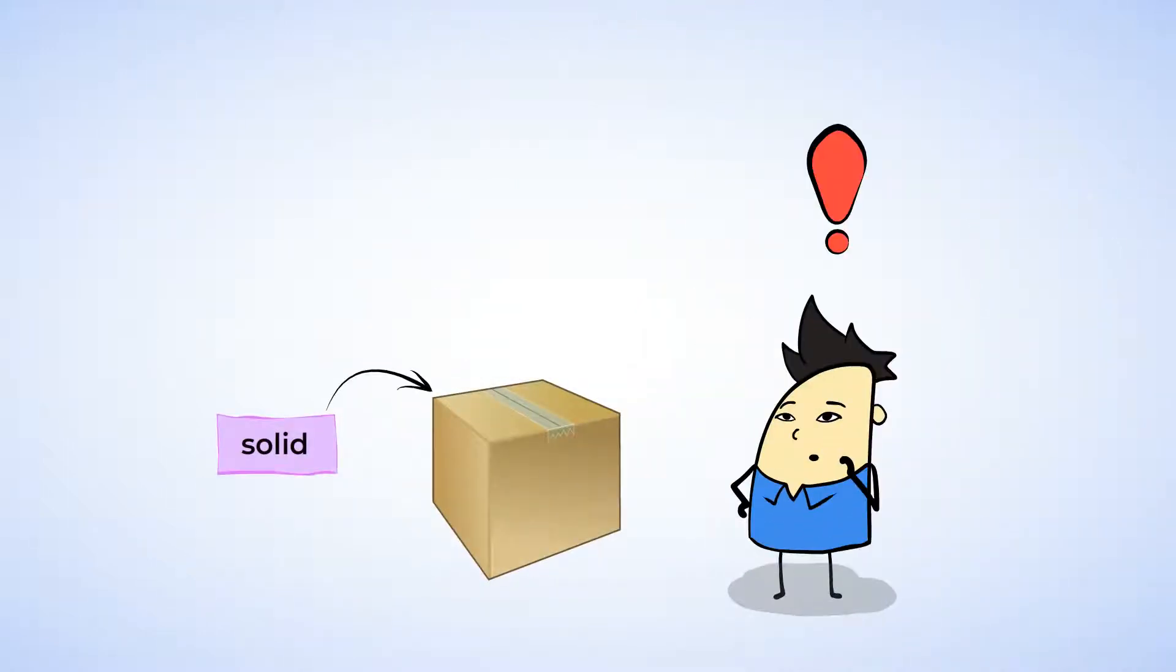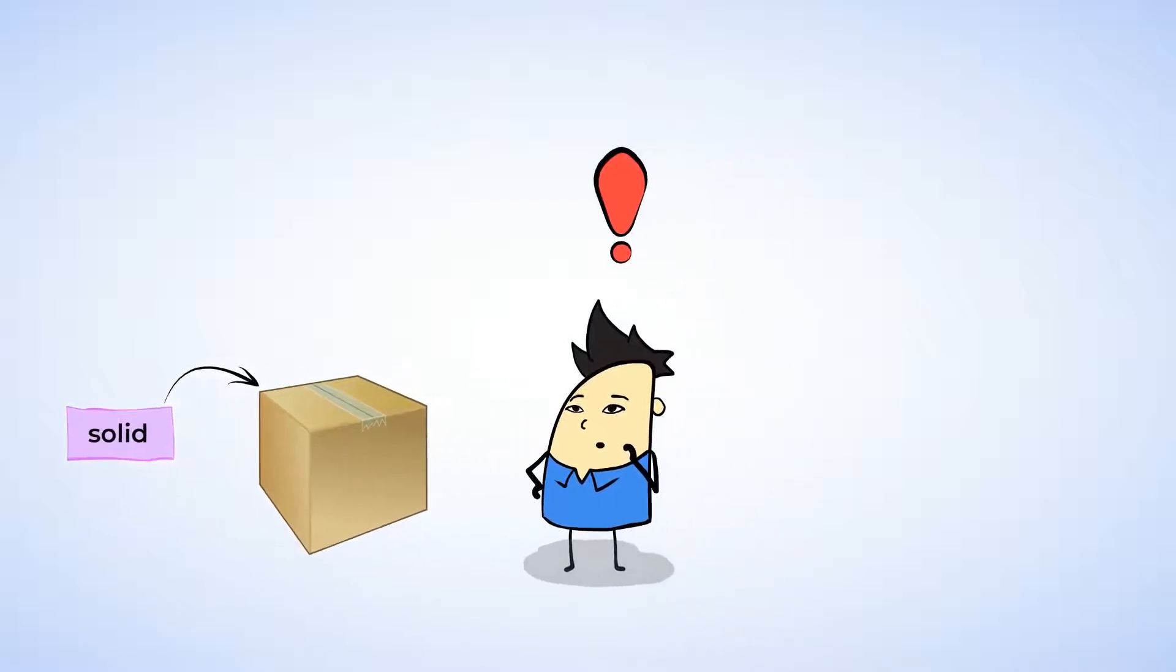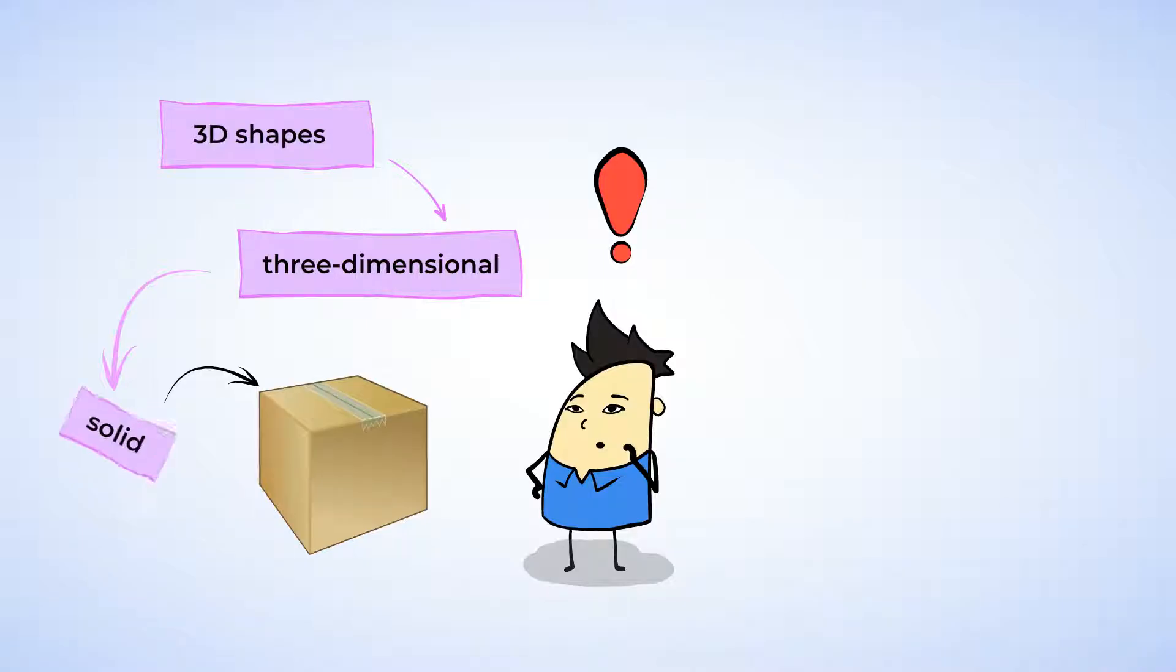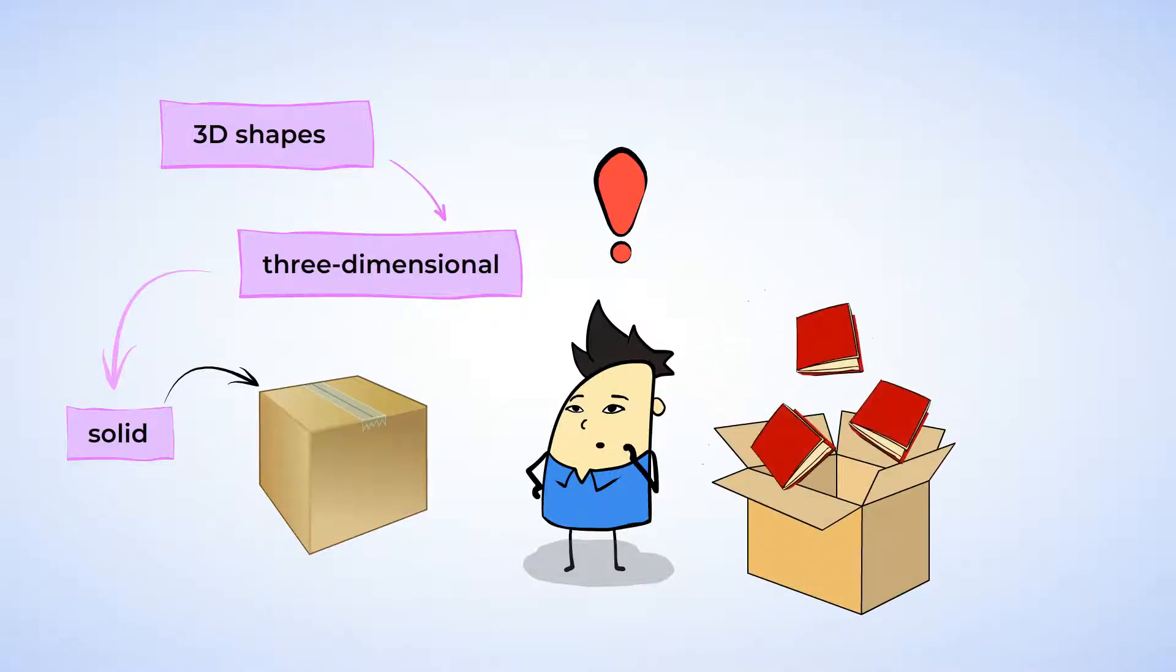But some shapes are solid, like the box. And this is a three-dimensional shape, or 3D. And that means it's a solid shape. And when we look at a shape like this, we can't see the back of it, or the bottom. Solid shapes take up more space, and you can put things in them if you want. Like putting books in a box, or water in a glass.